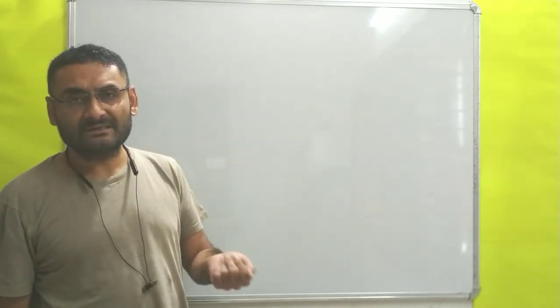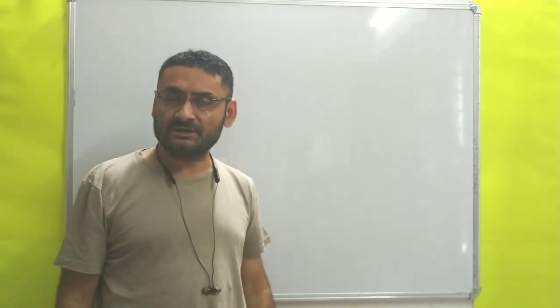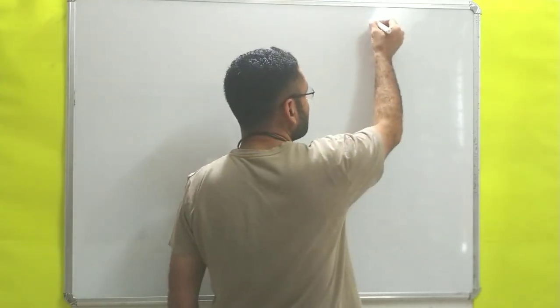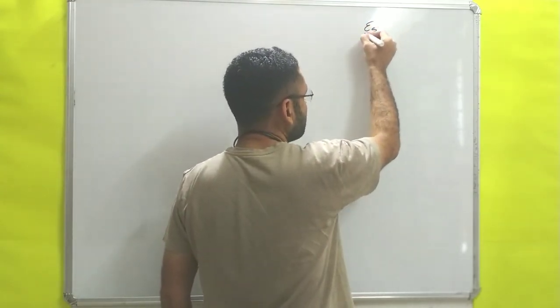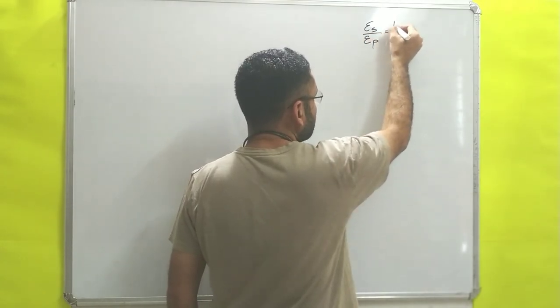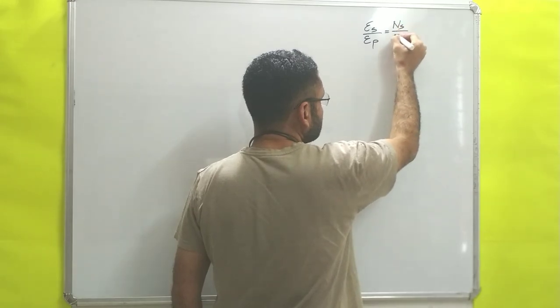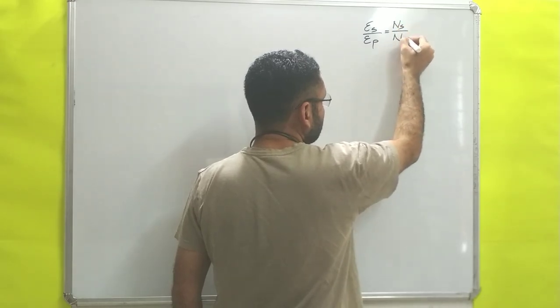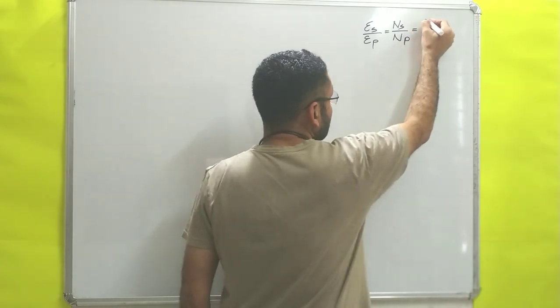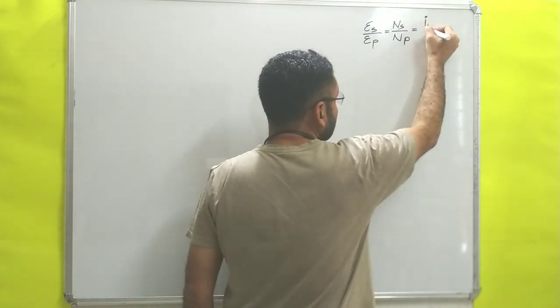In the previous video we discussed about the construction and working principle of the transformer, in which we derived one most important equation: potential in secondary coil divided by potential in primary coil equals number of turns in secondary coil divided by number of turns in primary coil.